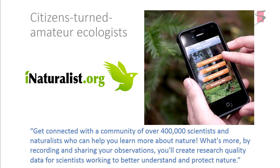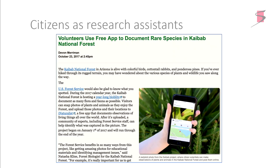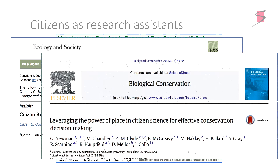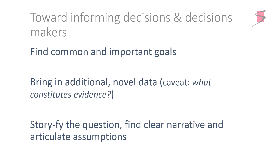There are several papers on citizen science and leveraging it for effective conservation decision-making. To summarize: what I've seen and heard from everybody is about finding common, big-thinking, important goals to bring in additional and novel data — with the caveat of how usable it is — and then to storify these questions, find nice narratives, and articulate them in a meaningful way. Thank you.